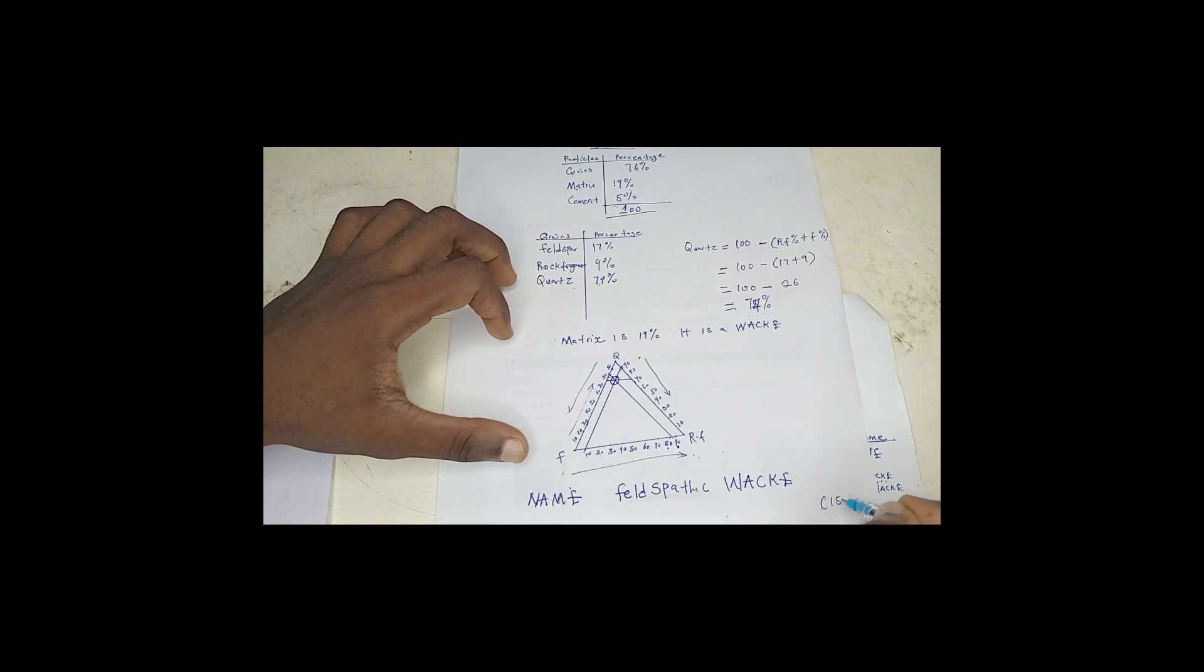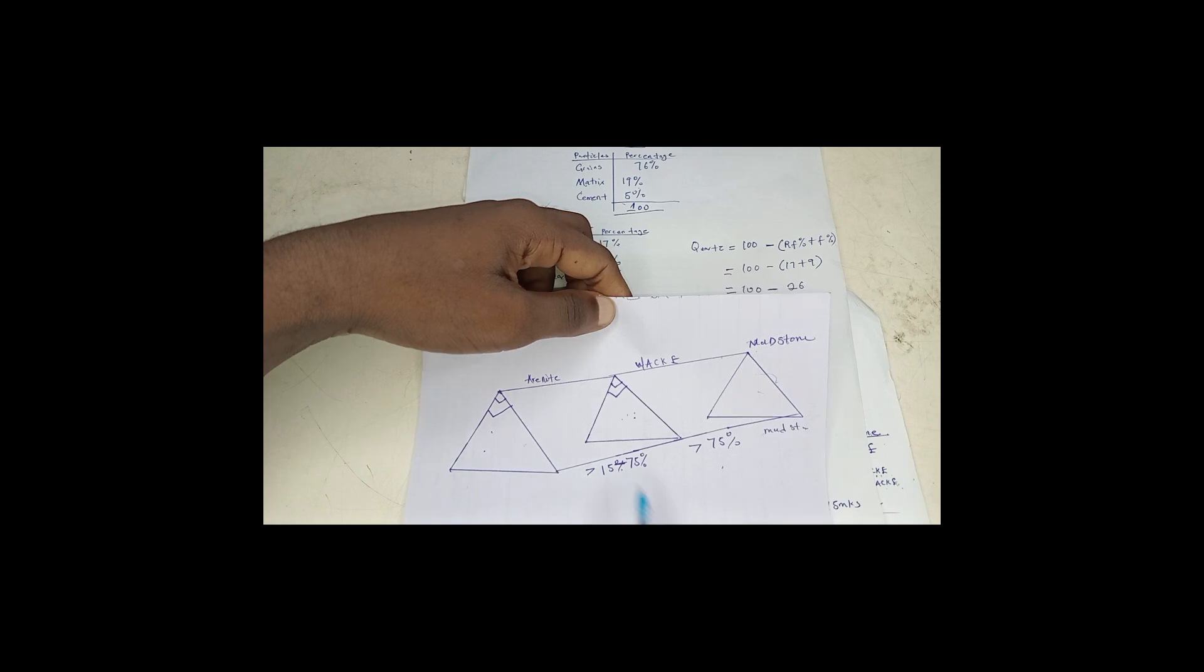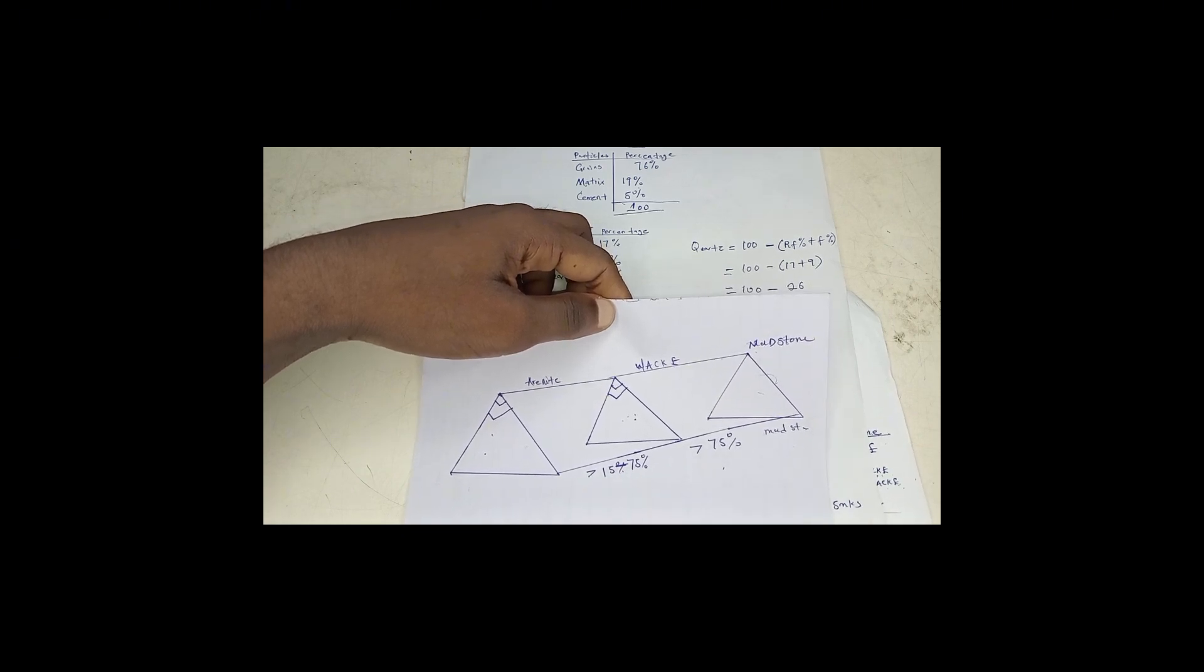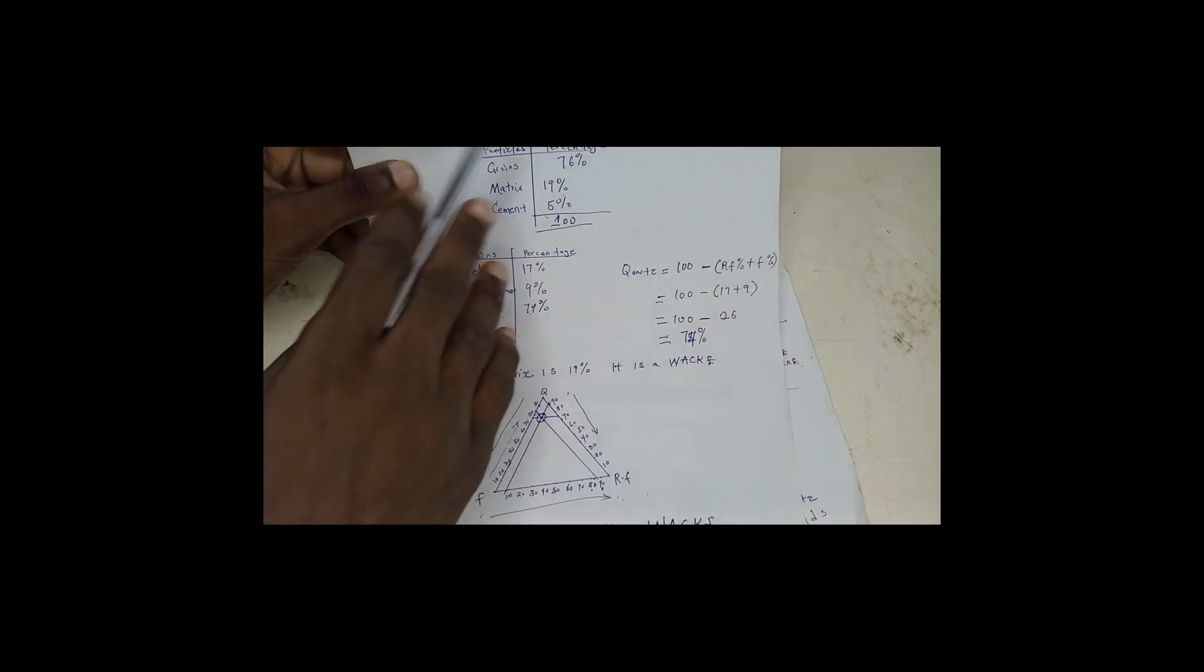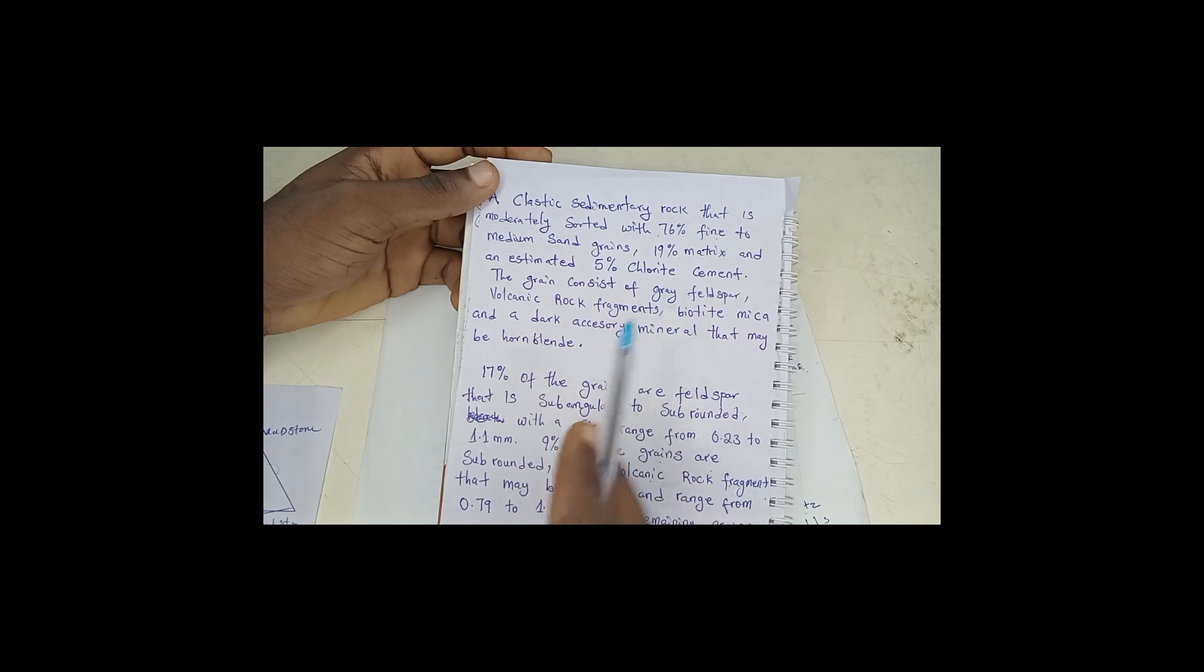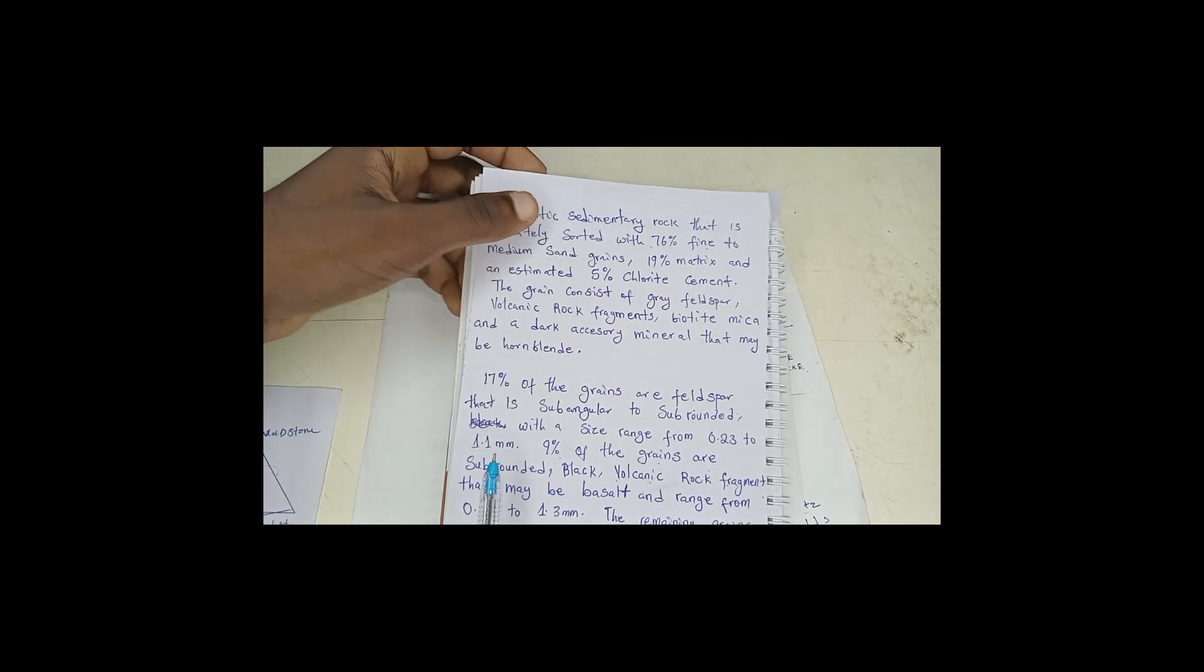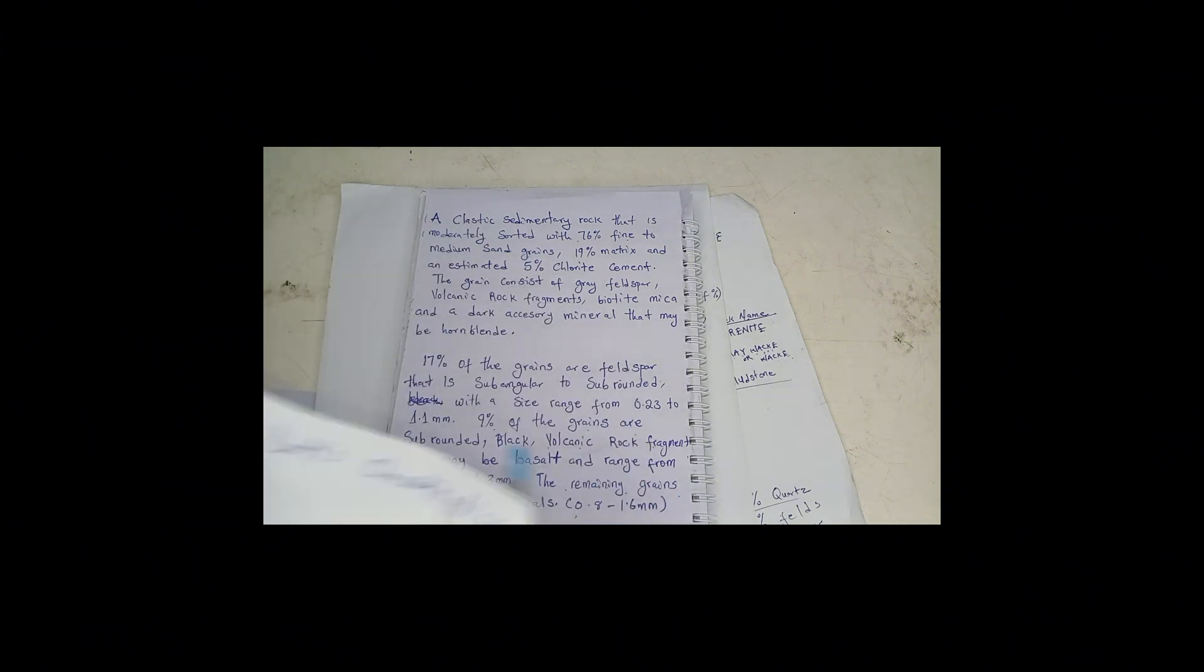This covers plotting on the correct section (arenite, wacke, or mudstone), noting the parameters for the matrix, and joining your values. We've come to the end of our rock classification and naming sandstone using the classification system. Thank you very much for listening. You can go back to the beginning and restart the video if you don't understand any parts.